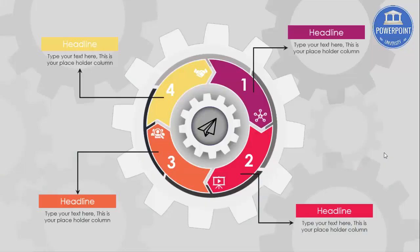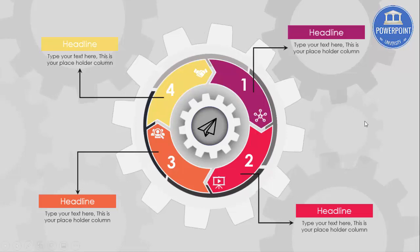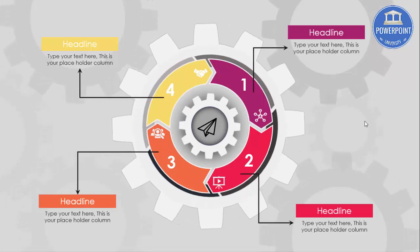Welcome to my YouTube channel PowerPoint University. In this tutorial I'm going to show you how to create this gears or wheel infographic slide. I have added four options with arrows — arrow number one where you can add your headline and detailed text, then your icon, then two, three and four. In the middle I have added a small gear, and on the outside is a bigger gear supported by small gears in the background. When I click it will start rotating.